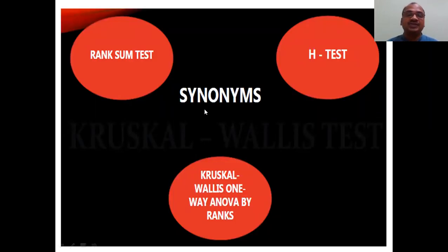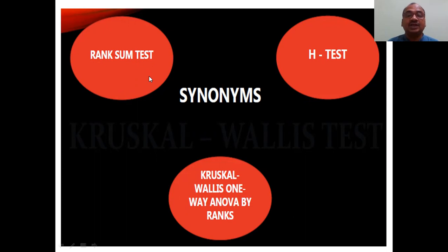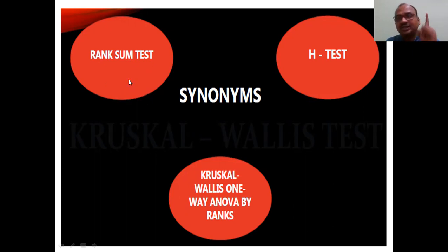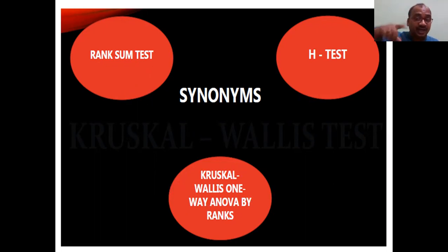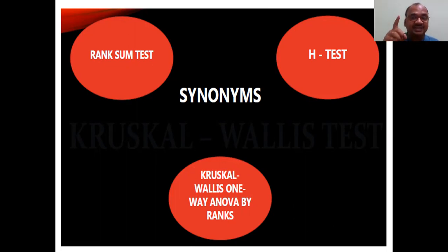There are some synonyms. It is also called as the rank sum test. Don't get confused with the Wilcoxon rank sum test — this is not Wilcoxon. You can call this the rank sum test. If it is the Wilcoxon test, they will give you the name directly: Wilcoxon rank sum test. It is also called the Kruskal-Wallis one-way ANOVA by ranks. The main characteristic of this test is the rank — here we are giving ranks.